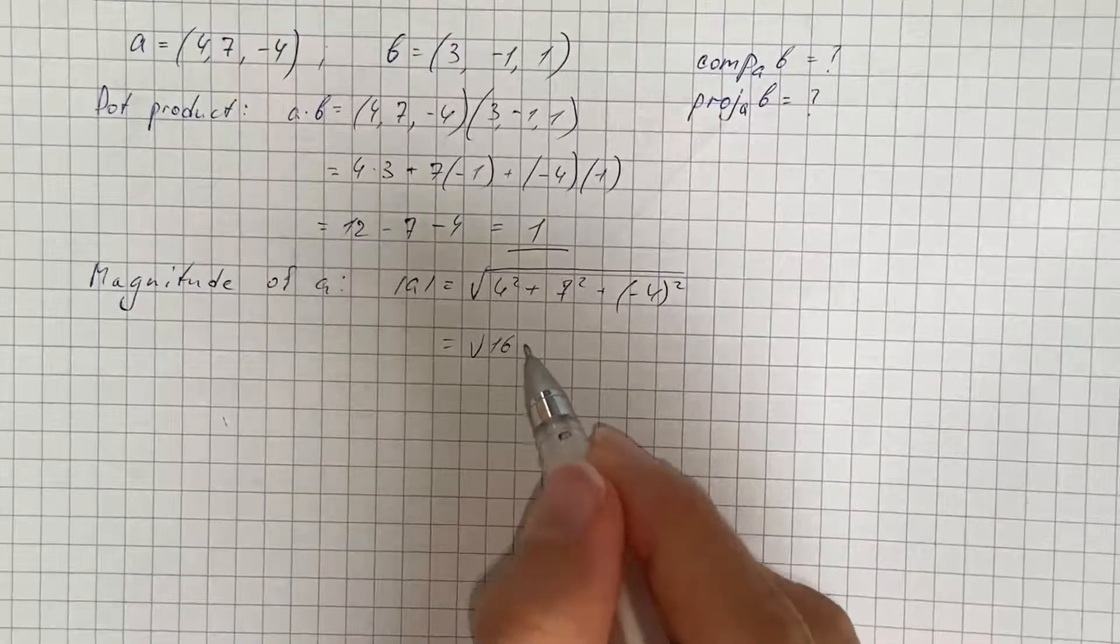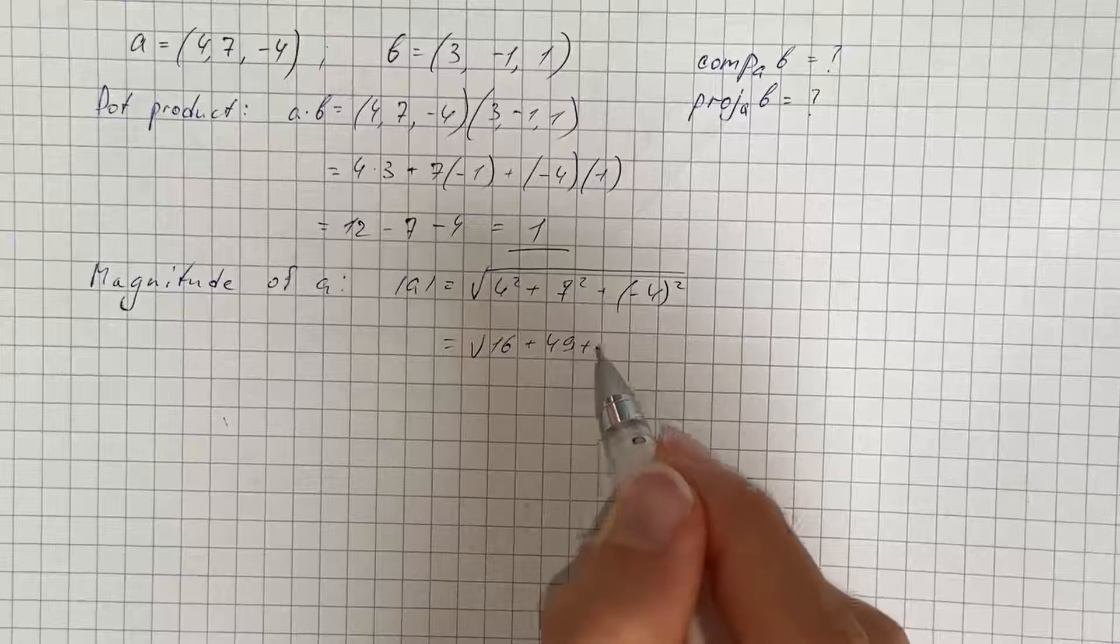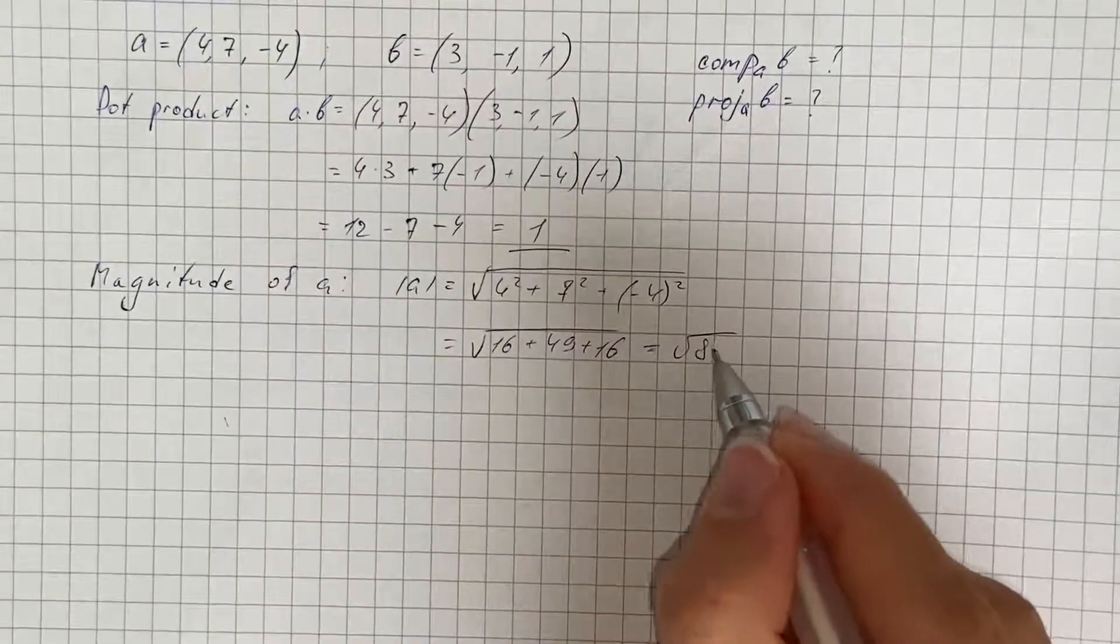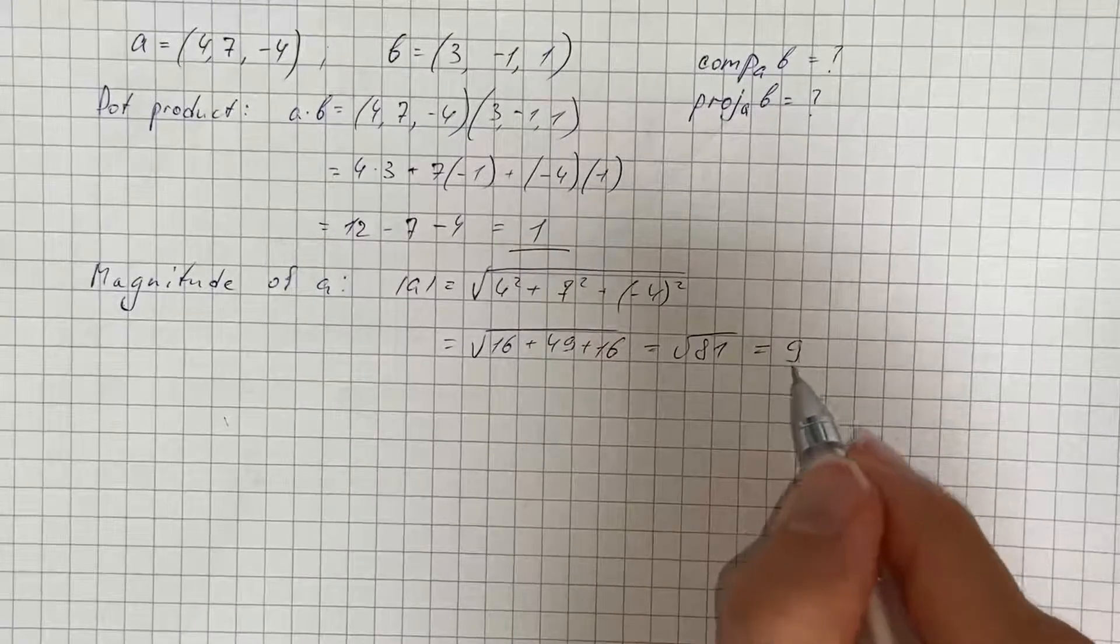We get 16 plus 49 plus 16, which is square root of 81, and it equals 9.